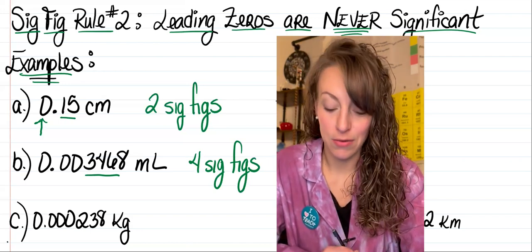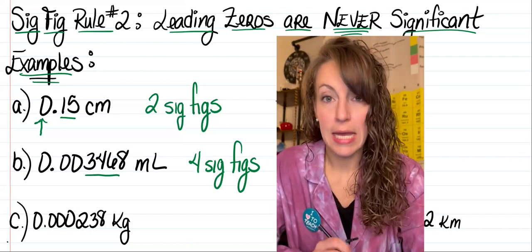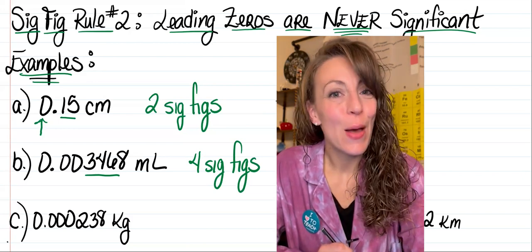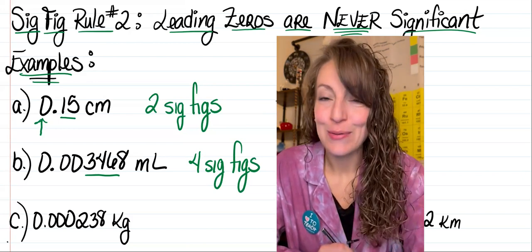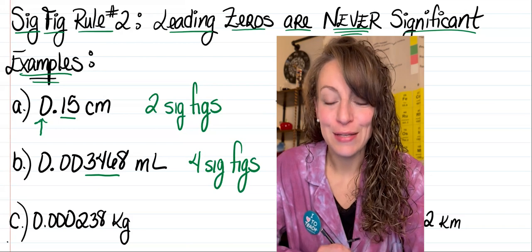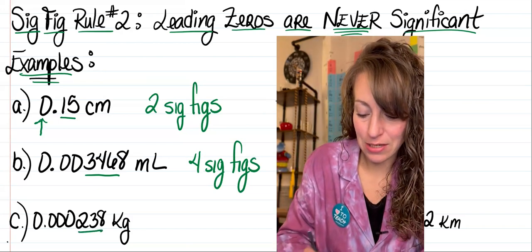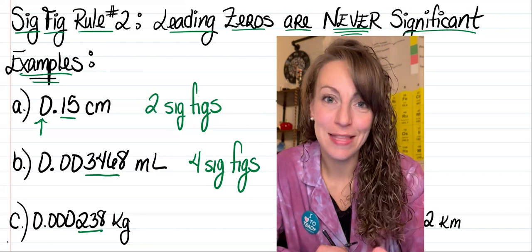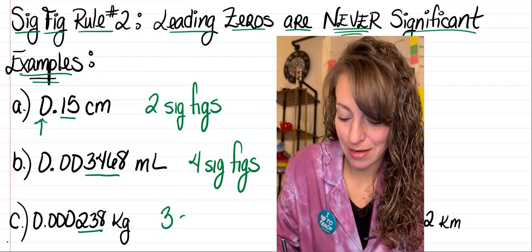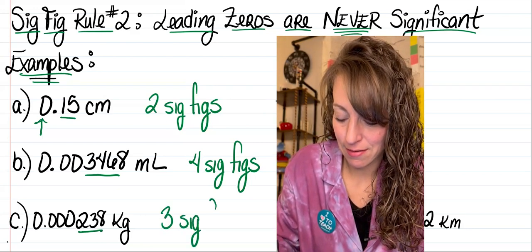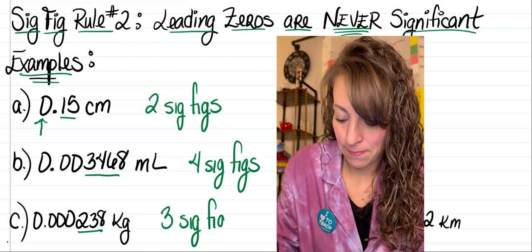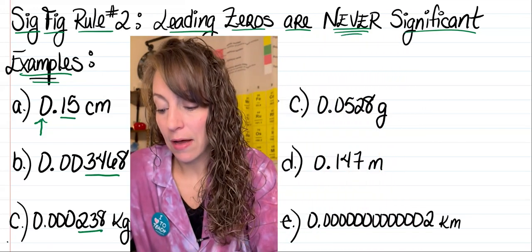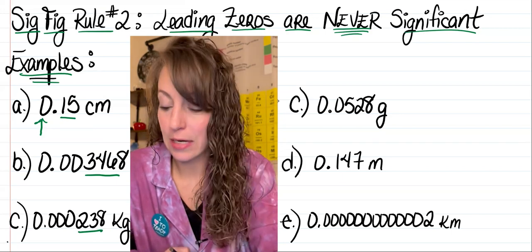In letter C we've got 0.000238 kilograms. We have four leading zeros, but they don't go towards our total number of sig figs. The only significant digits in that particular measurement are the two, the three, and the eight, so we've got three sig figs.